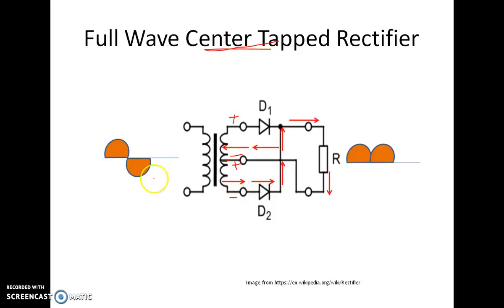In negative half cycle, D1 is off and D2 is on, giving me a current through D2, load and back to the center. Observe that in both the cycles, the current flowing through the resistance or the load is in same direction and hence you have the output in the same direction.